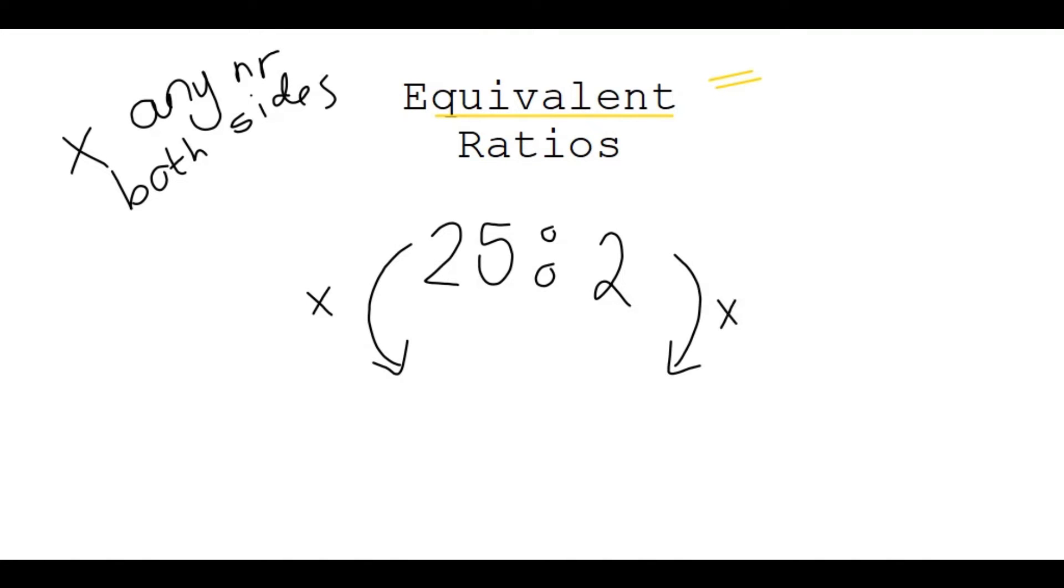So whatever number I choose to multiply with, it could be 1, 2, 3 or whatever. I just have to multiply with it on both sides. It could also be a big number like 100 or 1000. I choose to multiply by 3 on both sides. Then I get 75 here, 25 times 3. And on the other side, 2 times 3 is 6.